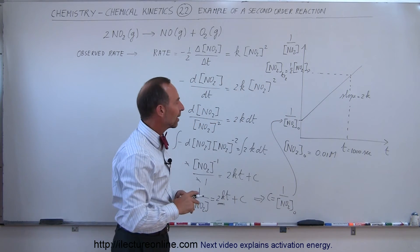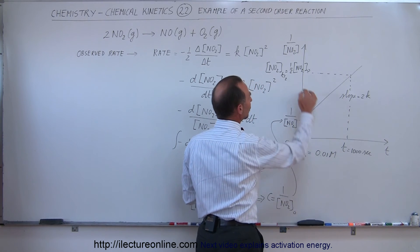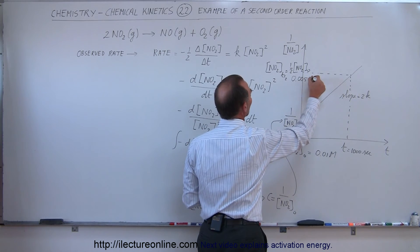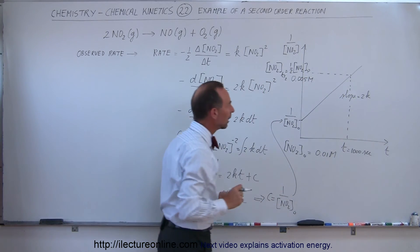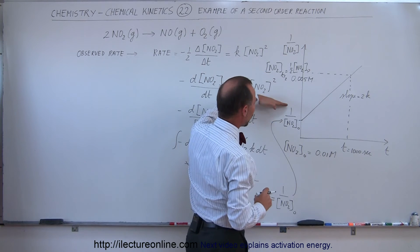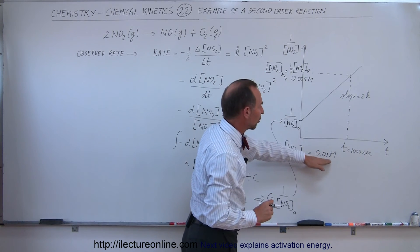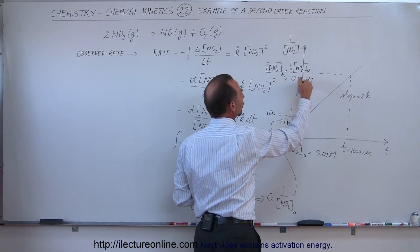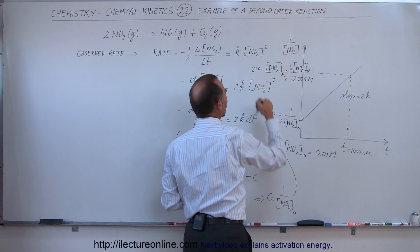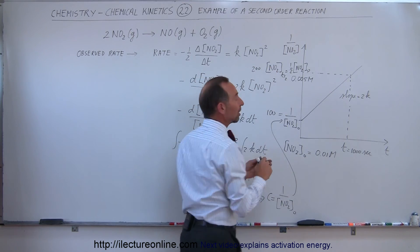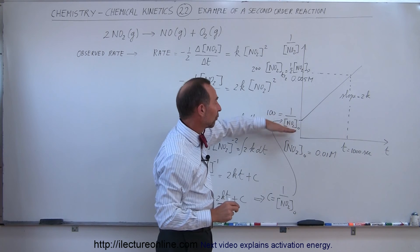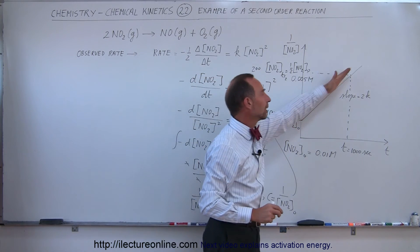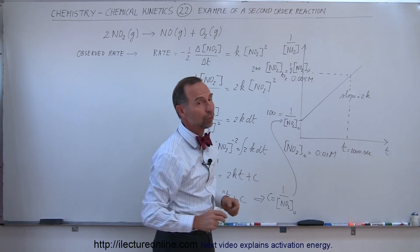So if the concentration was 0.01 molar initially, it is now 0.005 molar. One over 0.01 equals 100, and one over 0.005 equals 200. You can see there is still a linear relationship in terms of the inverse of the function — one over the initial concentration is 100, one over half the concentration is 200 — and that is where the linearity comes from even though this is a second order reaction.